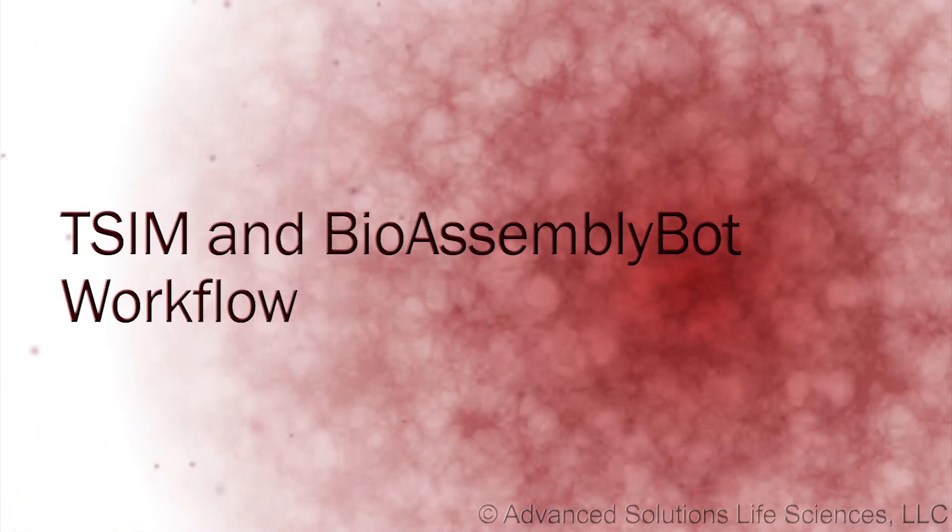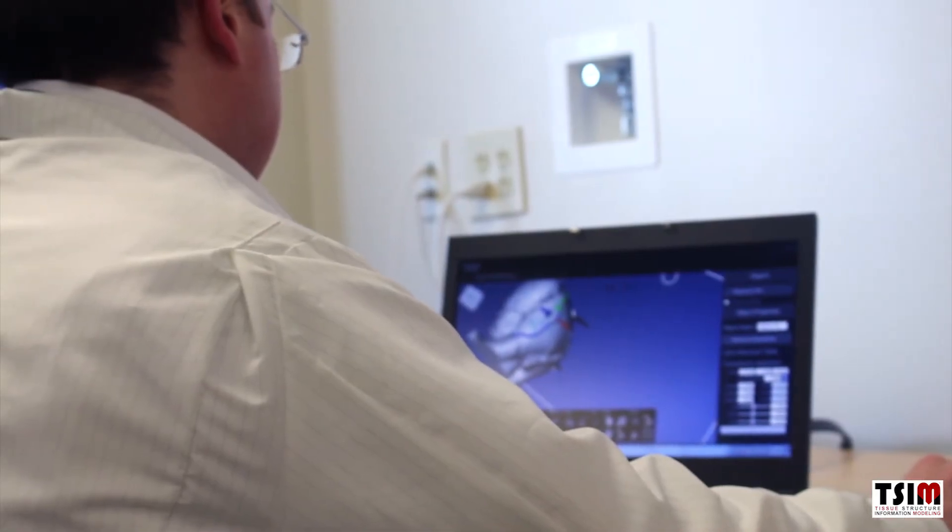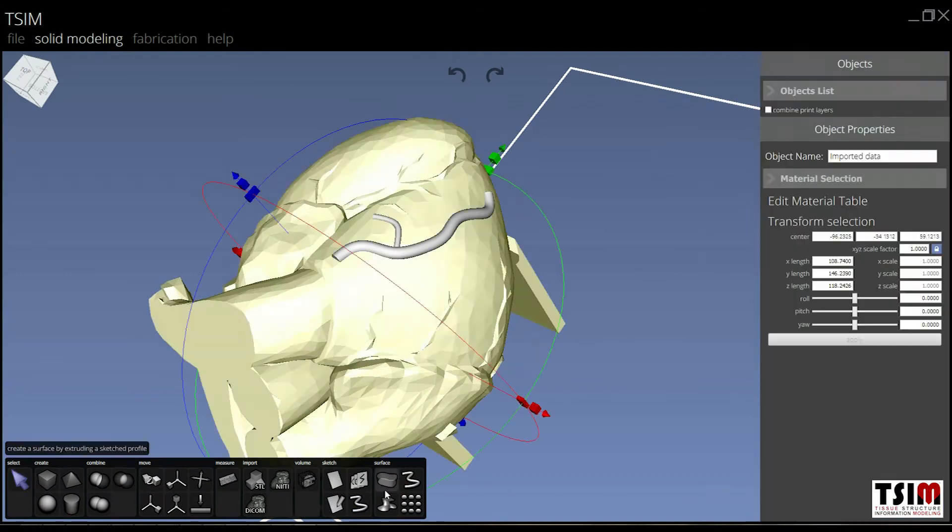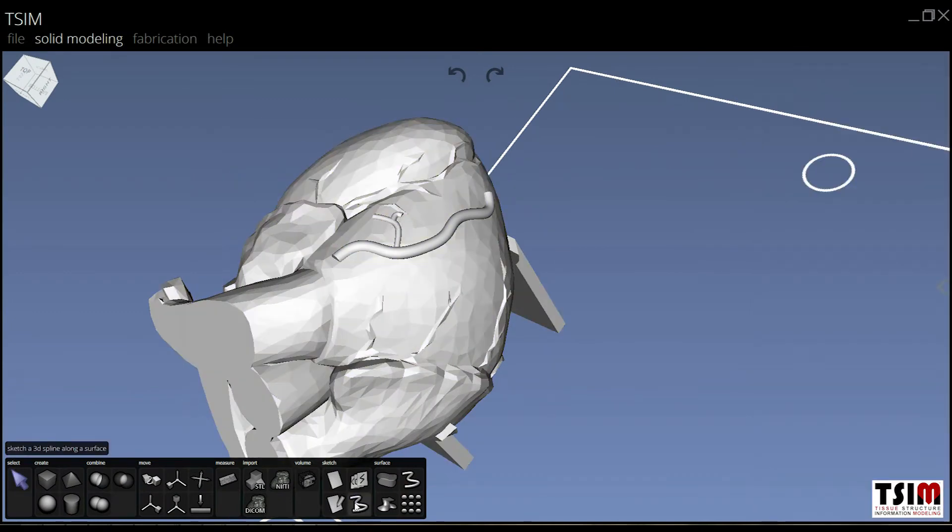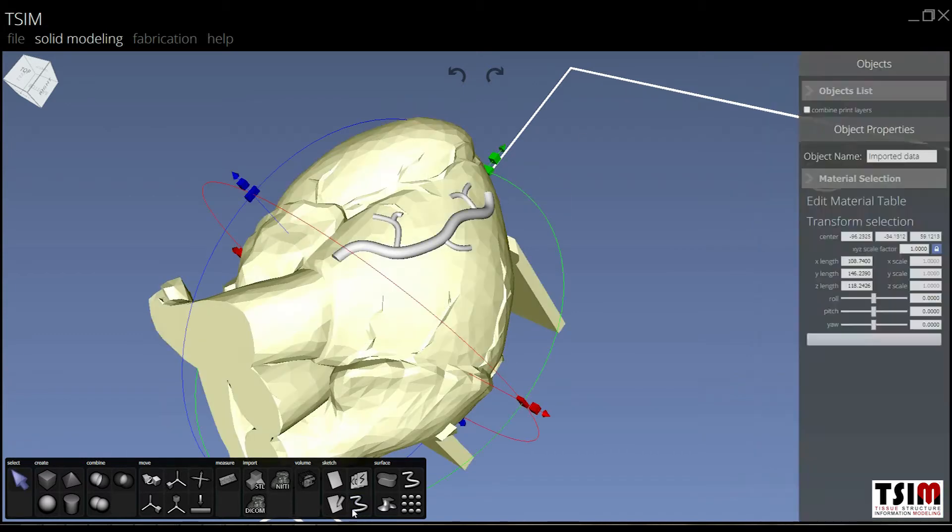In this particular example, we'll explore the tissue prototyping capabilities of the TSIM and BioAssemblyBot system. Here, working from a pre-existing heart model, we're going to add a new coronary vascular tree design to the surface of the heart in an effort to explore different ways to construct heart tissue.